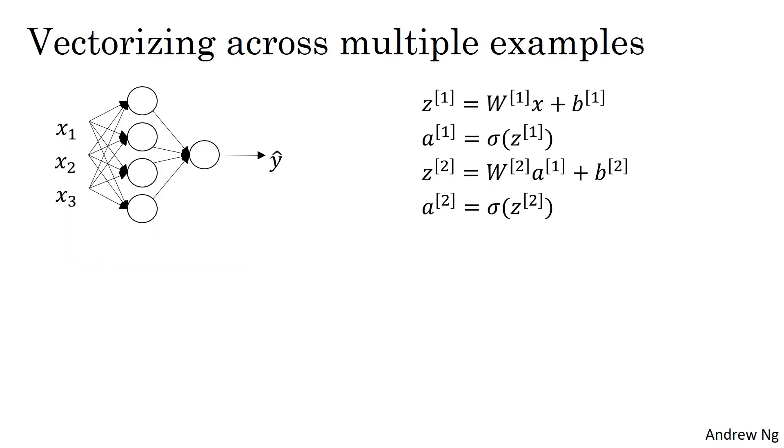These were the four equations we had from the previous video of how you compute z1, a1, z2, and a2. And they tell you how given an input feature vector x, you can use them to generate a2 equals y hat for a single training example.